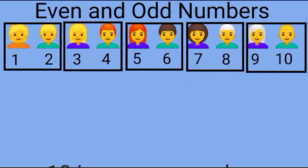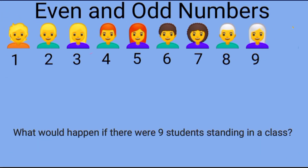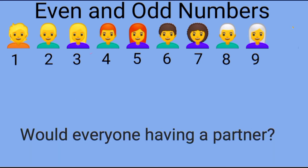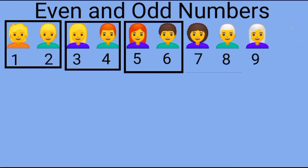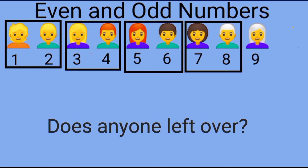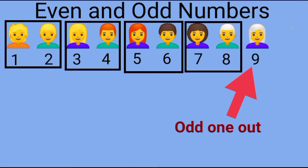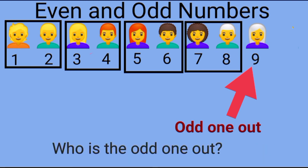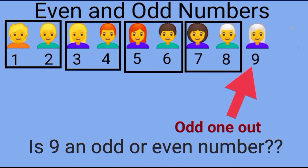Does everyone have a partner? Yes! When all the students could be paired up and they are able to get partners, then 10 is an even number. What would happen if there were nine students standing in the class? Would everyone have a partner? Let us see whether all the students could be paired up evenly or not. Does anyone get left over? Yes, one of the children will not have a partner. The ninth one is the odd one out — so nine is an odd number.